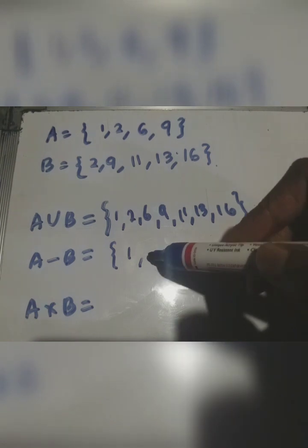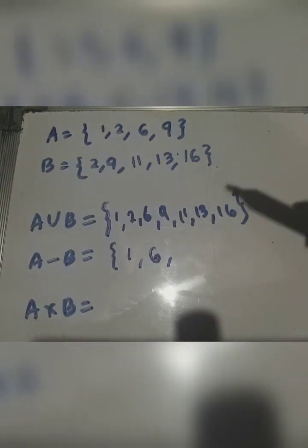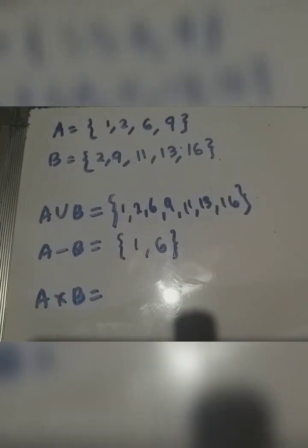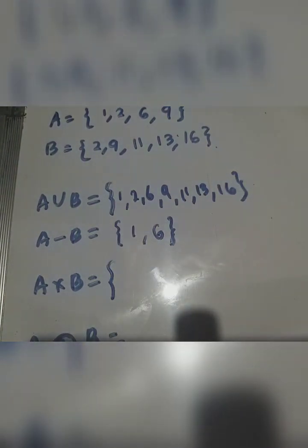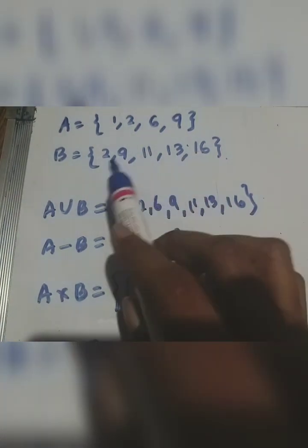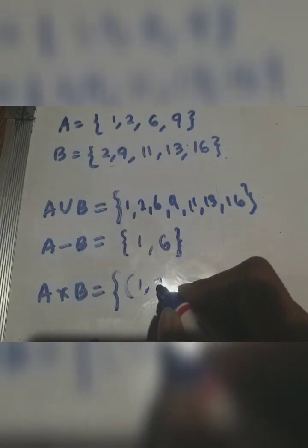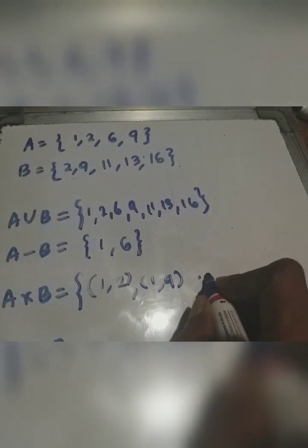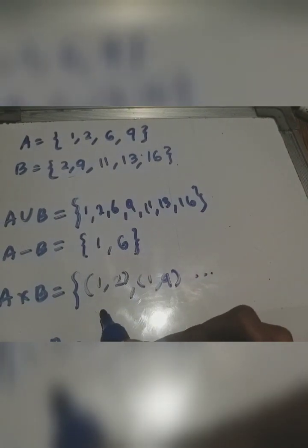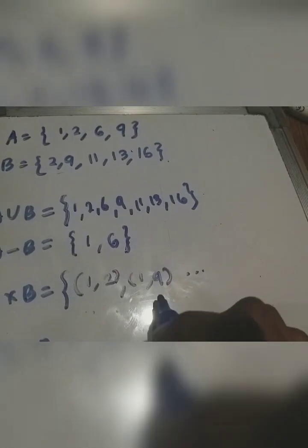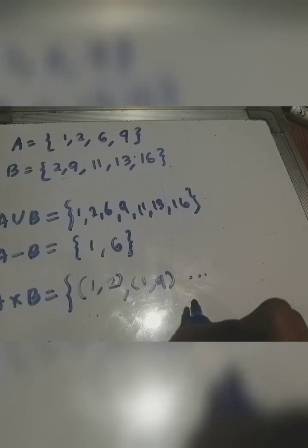A cross B: we have to compute all ordered pairs. A × B = {(1,3), (1,9), (1,11), (1,13), (1,16), (2,3), (2,9), (2,11), (2,13), (2,16), (6,3), (6,9), (6,11), (6,13), (6,16), (9,3), (9,9), (9,11), (9,13), (9,16)}.